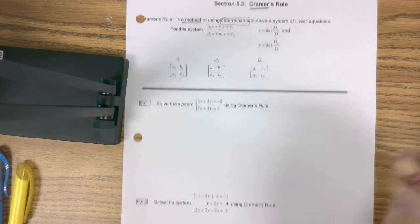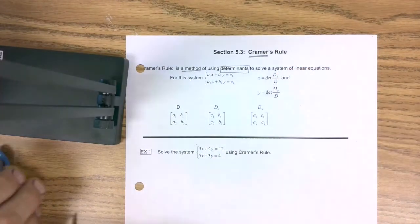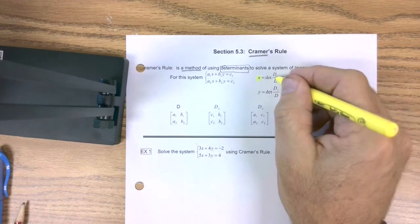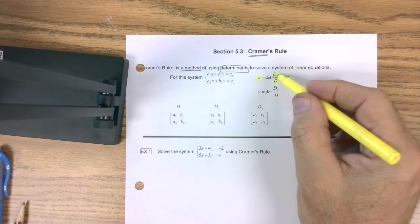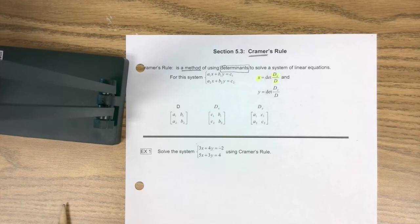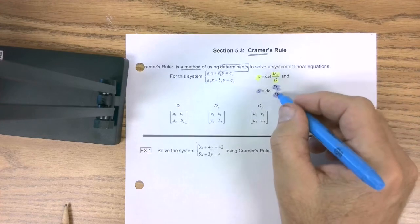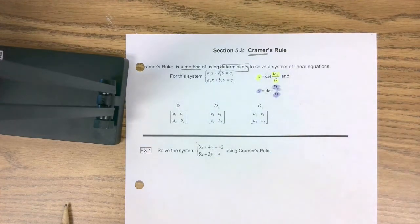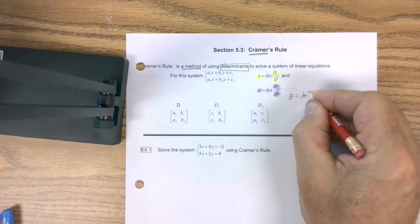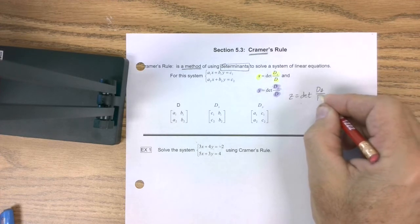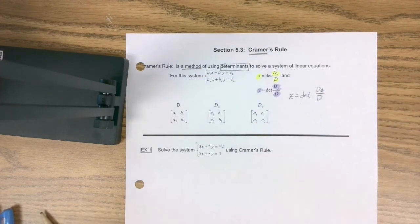Here's the formula: X is equal to the determinant of DX over D. What in the world are DX and D? Y is equal to the determinant of DY over D. And Z equals — what do you think? — the determinant of DZ over D. Let's talk about what each of these parts means.